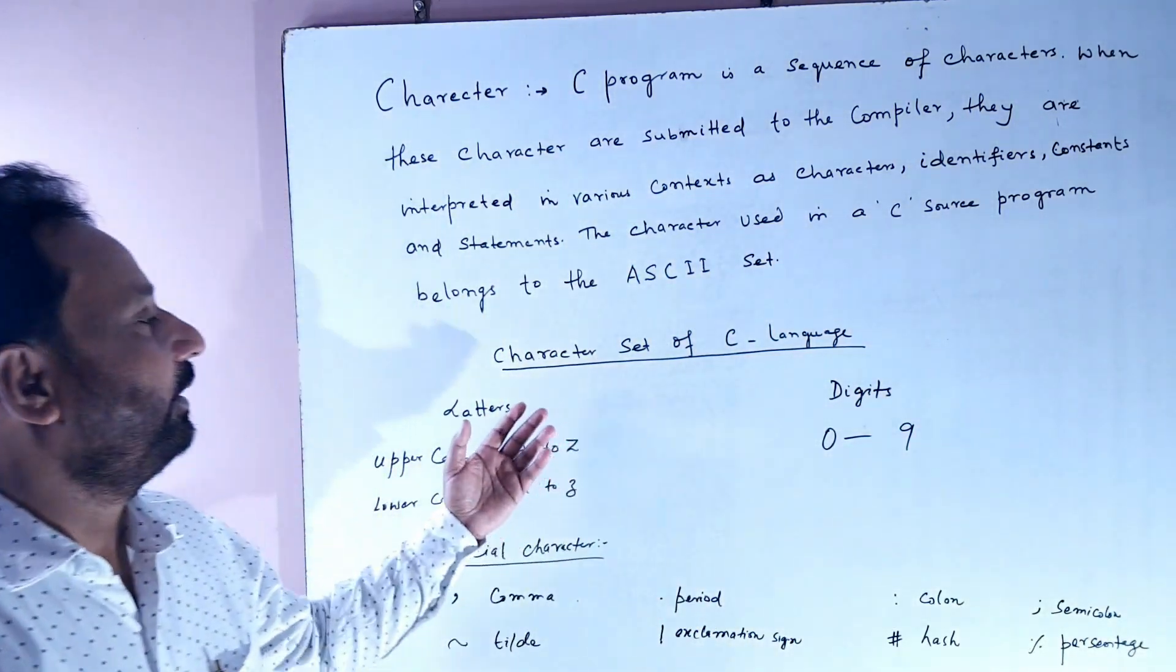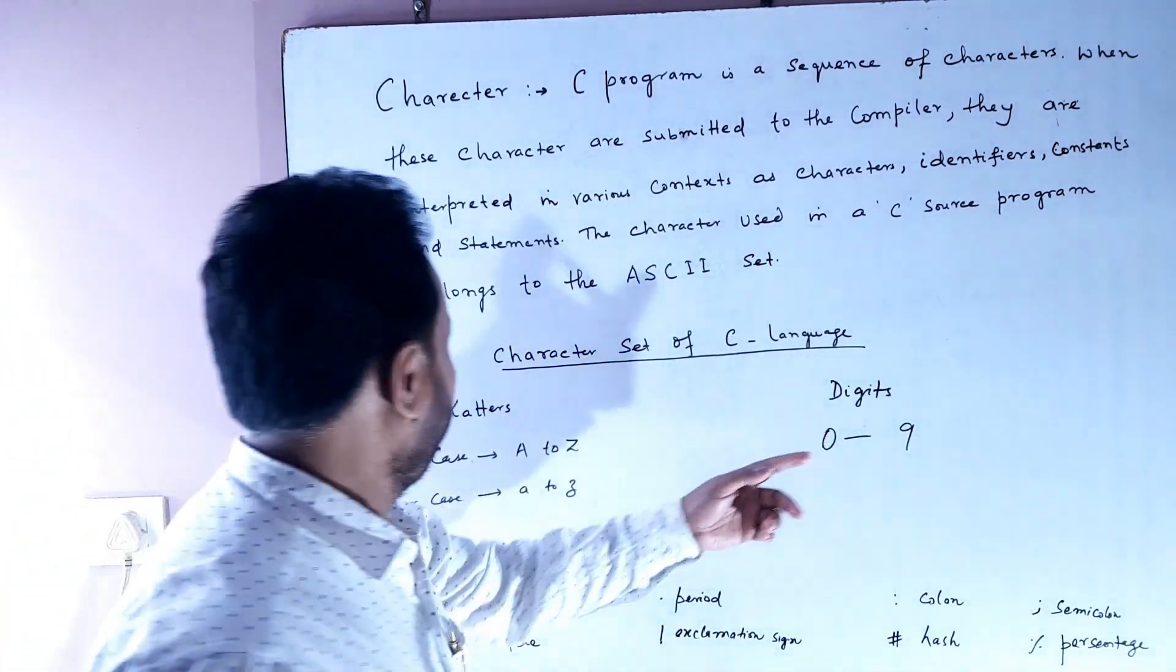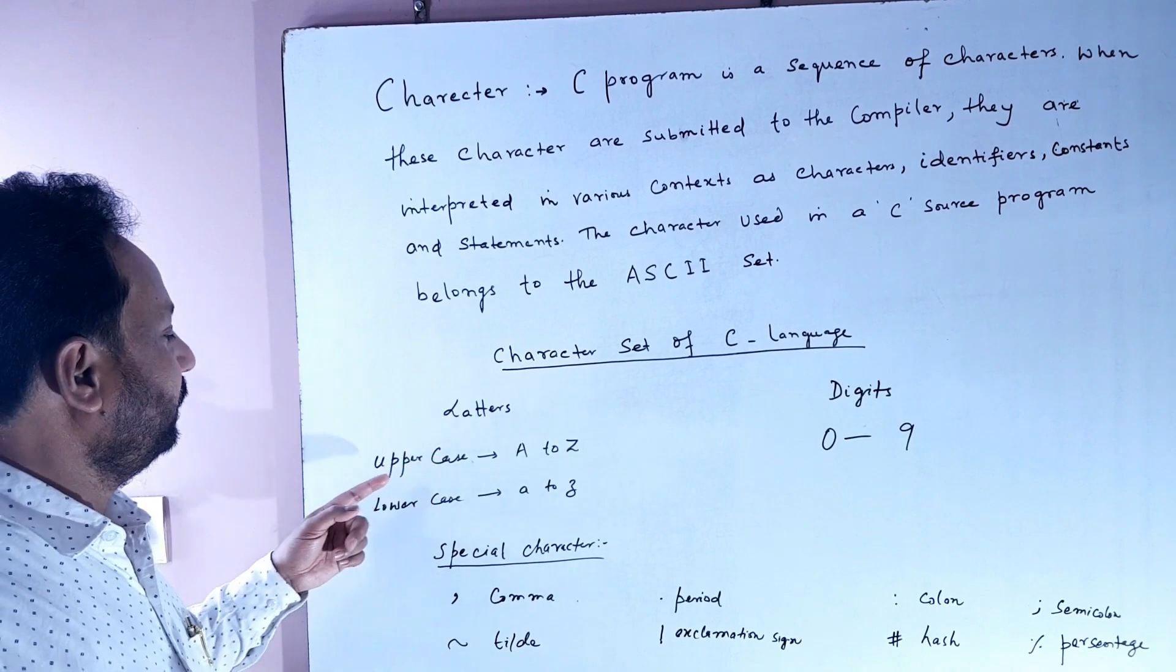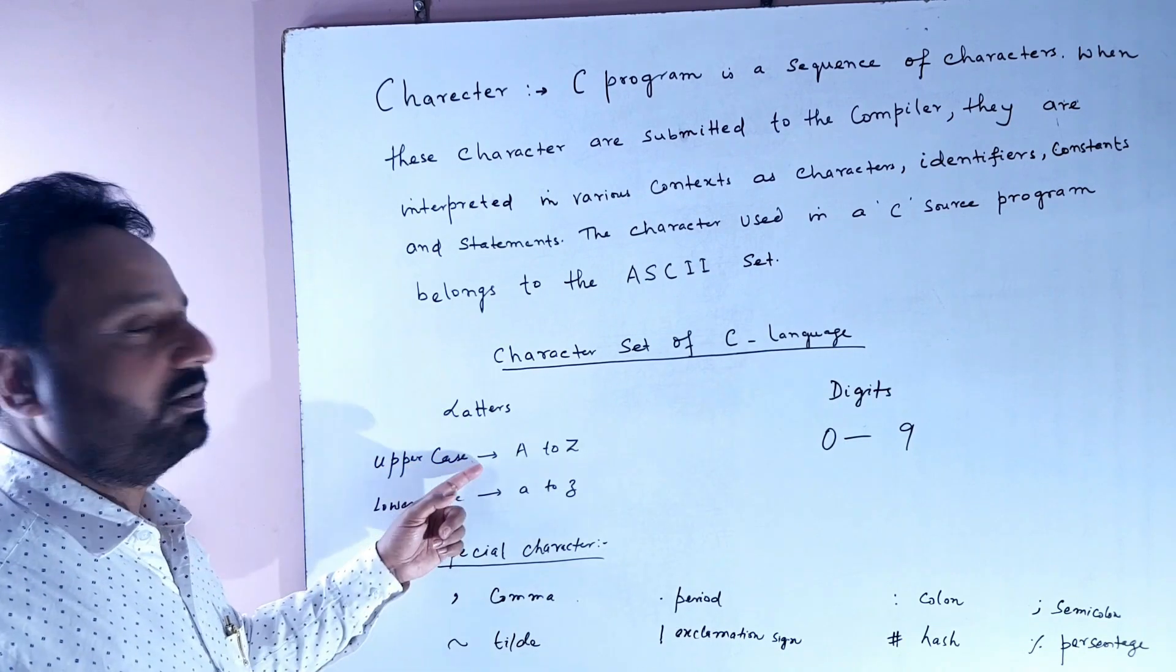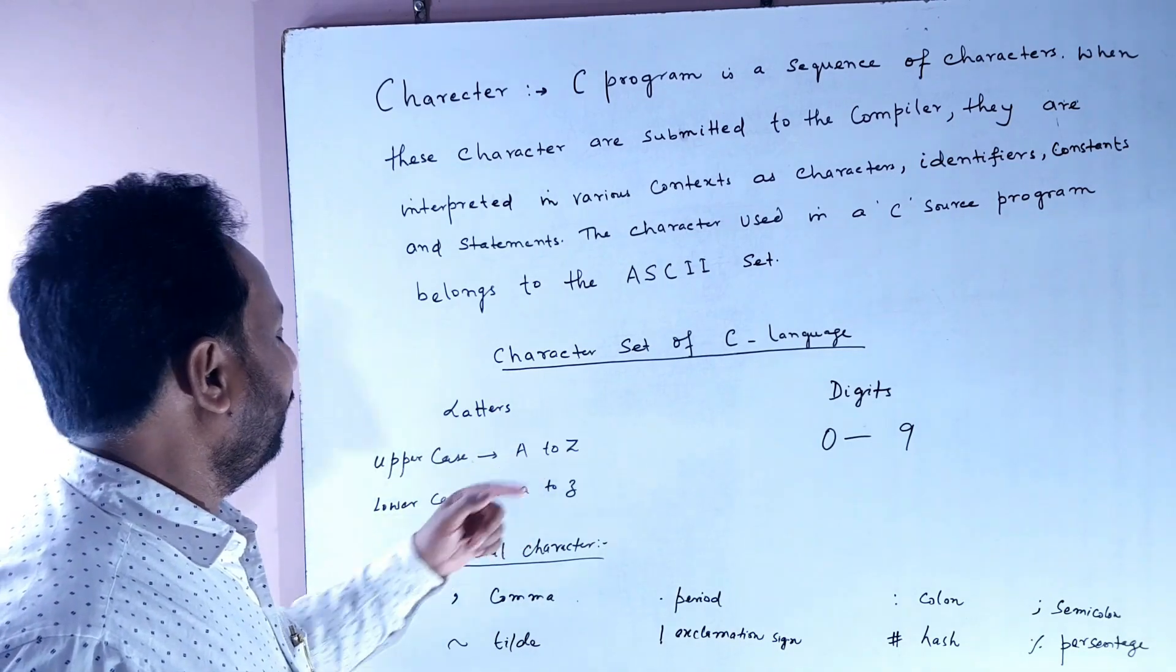The character set of C language includes letters, digits, and special characters. Letters in uppercase are A to Z, written in capital letters.